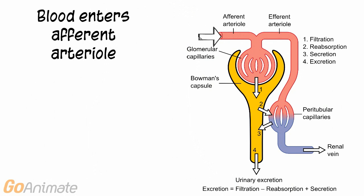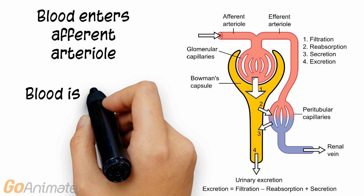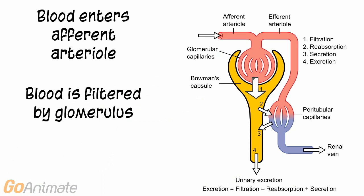Blood enters the nephron at the afferent arteriole. The afferent arteriole brings blood to the first part of the nephron, known as the glomerulus, which is the filter.